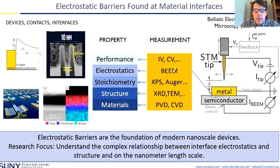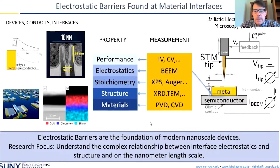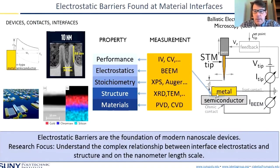The technique is called Ballistic Electron Emission Microscopy, or BEEM, and it's based on STM. What it's able to do is measure the electrostatic barrier at the interface between a metal and semiconductor, or a metal-insulator-semiconductor. Our research group is focused on understanding the complex relationship between interface electrostatics and structure on a nanometer length scale. As these devices shrink, the contact areas — like between the source and drain — are now in the order of 30 to 40 nanometers squared, or even smaller, getting smaller with every generation. So you need to know how that fluctuates on the nanoscale.